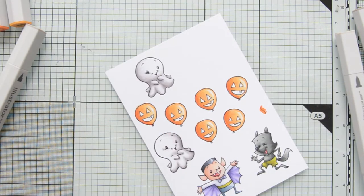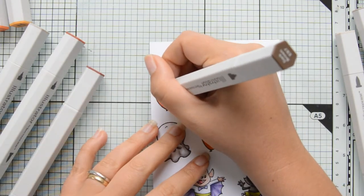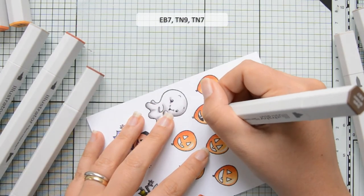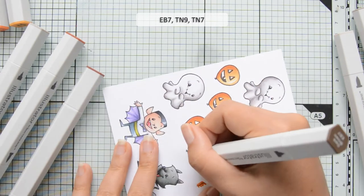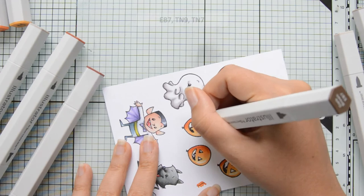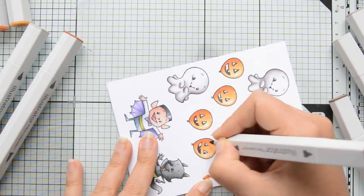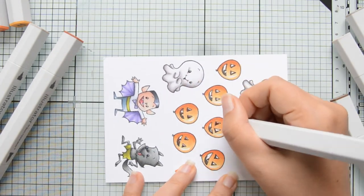I did want this ghost to look white, but I wanted to add some dimension by adding shadows. For that I used some warm gray markers.